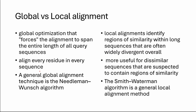Global alignment forces the alignment to span the entire length of the sequences, whereas local alignment only looks for regions of similarity. Global alignment aligns every residue, while local alignment can be useful for dissimilar sequences where every residue cannot have a counterpart in the second sequence.